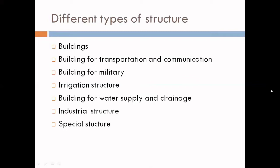The third one is structures for military purposes. These include underground structures, bunkers, bridges, towers, etc. Next is irrigation structures, which include dams, barrages, weirs, bridges, canals, hydro-regulators, etc.